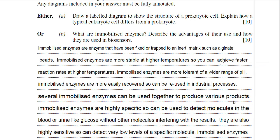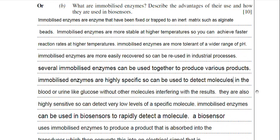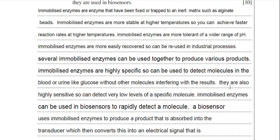I've said about them being more tolerant to a wider range of pHs. Immobilised enzymes are more easily recovered, so they can be reused in industrial processes. I've talked about the fact that you can use several immobilised enzymes together to produce a variety of products. So I've just really regurgitated everything that I've mentioned in the notes to get the full marks in this essay.